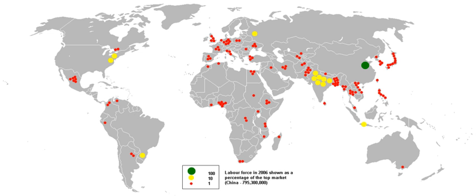Unorganized sector, also known as own-account enterprises, refers to all unlicensed, self-employed or unregistered economic activity such as owner-manned general stores, handicrafts and handloom workers, rural traders, farmers, etc. India's Ministry of Labour, in its 2008 report, classified the unorganized labor in India into four groups.